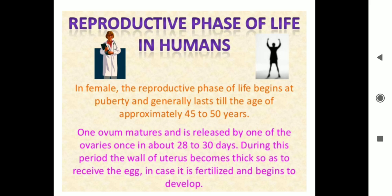The uterine wall in females prepares itself to receive and develop a fertilized egg. In cases where there is no fertilization, the thickened lining of the uterine wall breaks down and passes out along with the bloodstream.